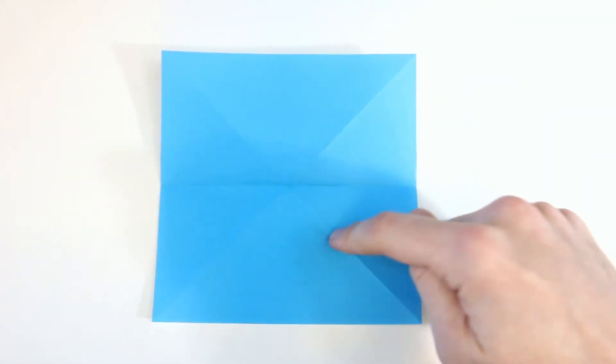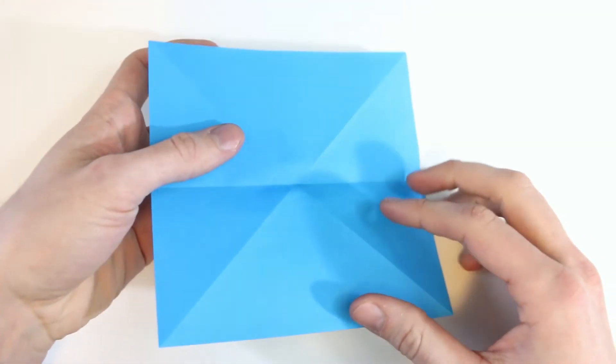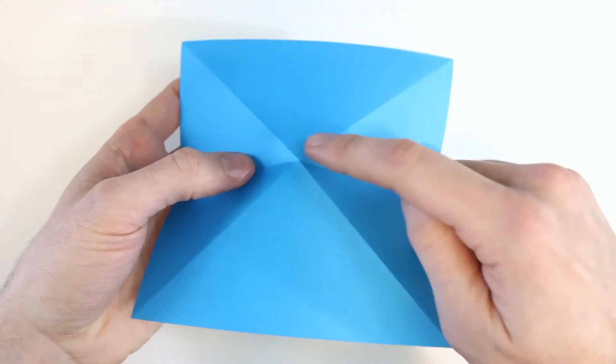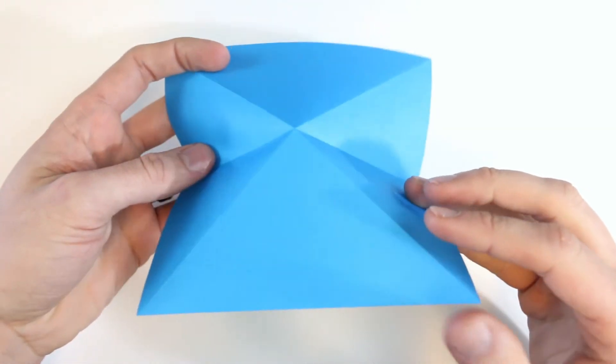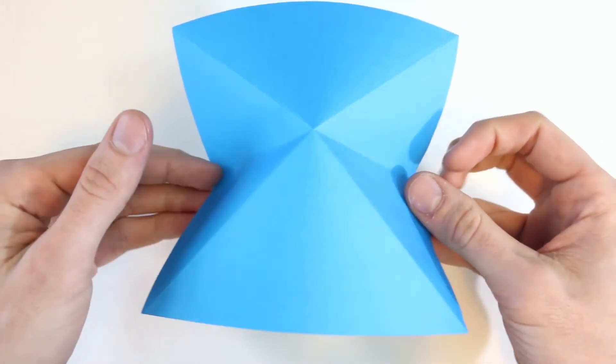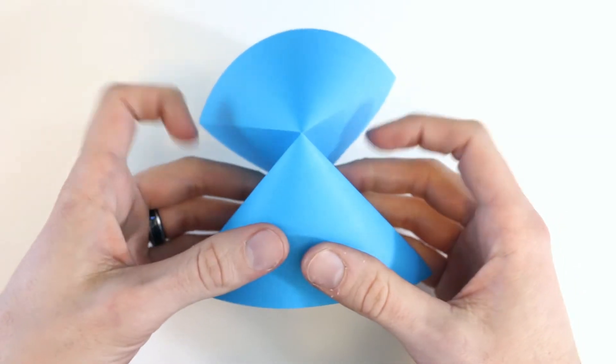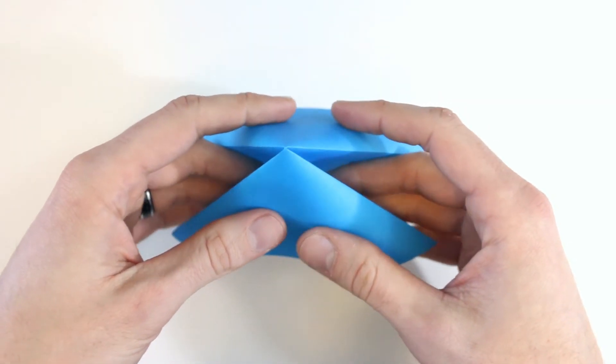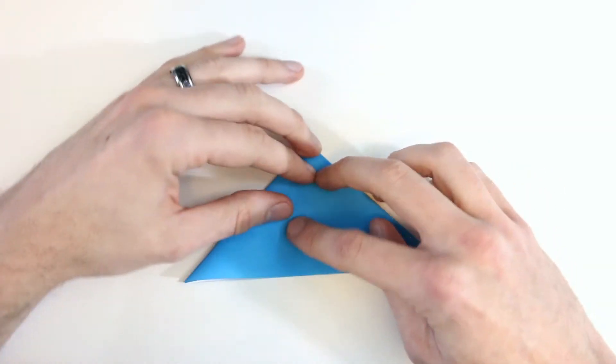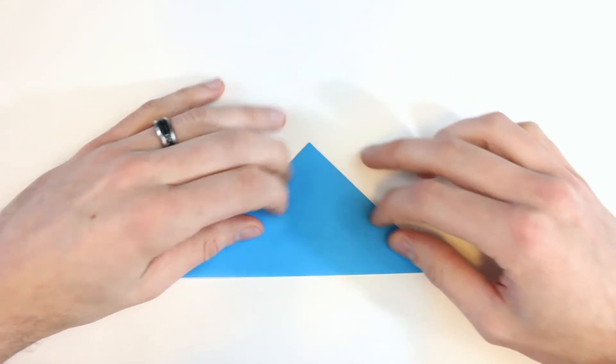Next we're going to form all of these creases at the same time. So you'll need to pick it up. Make sure the center of this X is going to point upwards. And then you just press on the two sides here. Bring those together. And then you can push all of this together and lay it flat. So it should form a triangle. And then press everything down firmly.